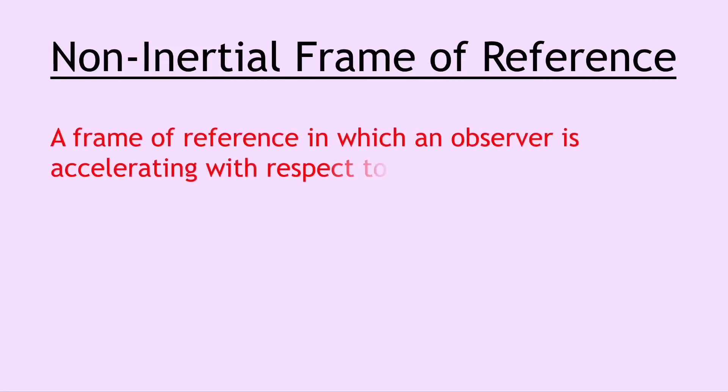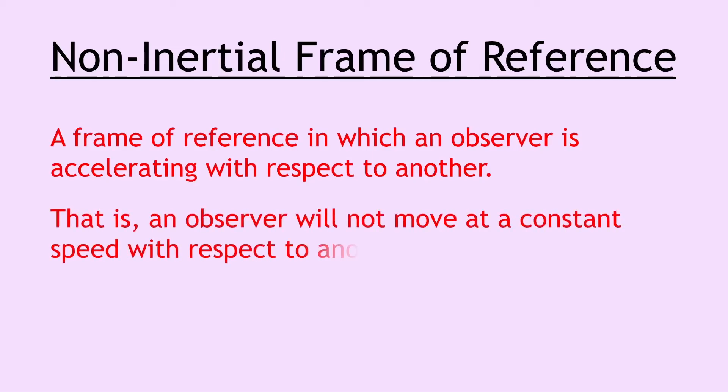Next we have a non-inertial frame of reference and this is quite simply the opposite of inertial frames of reference and this is a frame of reference in which an observer is accelerating with respect to another. That is an observer will not move at a constant speed with respect to another and non-inertial frames of reference are used to explain general relativity. Remember the term frame of reference can also be shortened to reference frame.